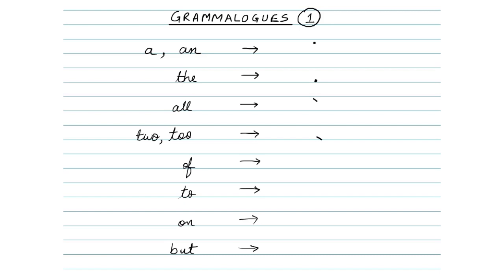Next, we have 'off'. This is represented by a tiny light stroke above the line, like this. Next, we have 'to', which is again represented by making a tiny light stroke, but this time on the line, like this.